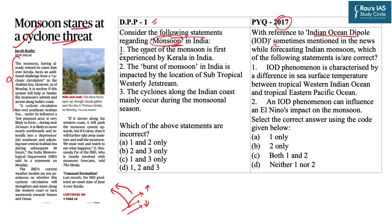Statement one says the onset of the monsoon is first experienced by Kerala in India. This statement is incorrect — the onset of monsoon in Kerala is dated at 1st June, but the onset of monsoon in the Andaman and Nicobar Islands is around 15th May. So when talking of all of India, you have to start from the Andaman and Nicobars, not Kerala.